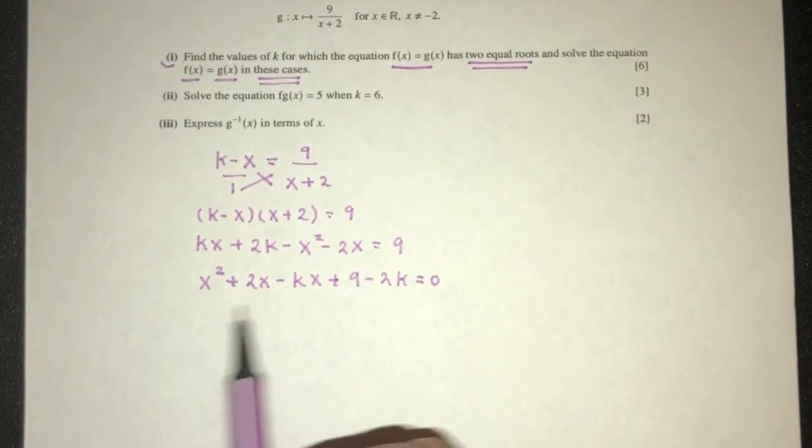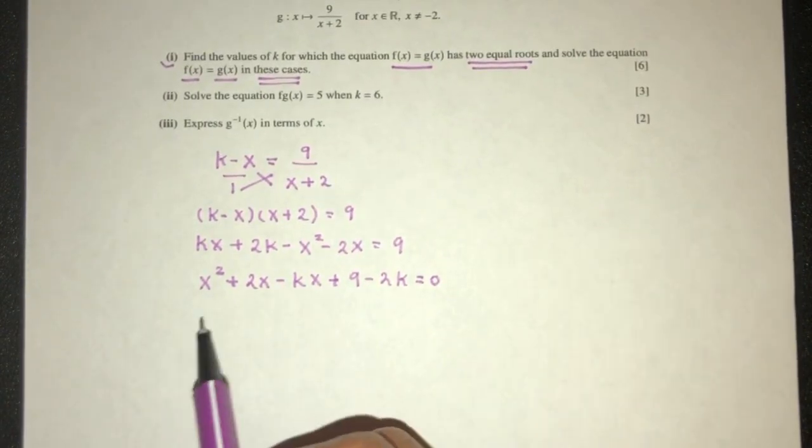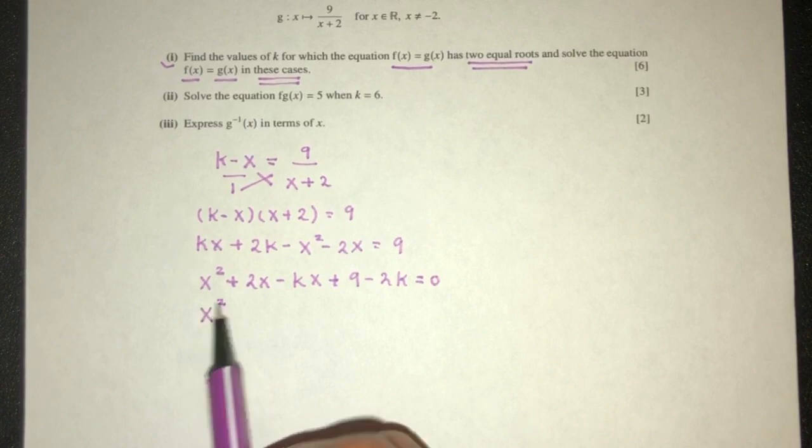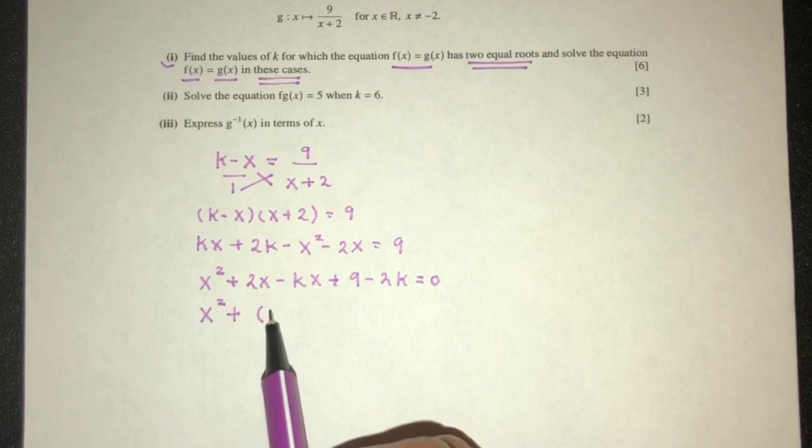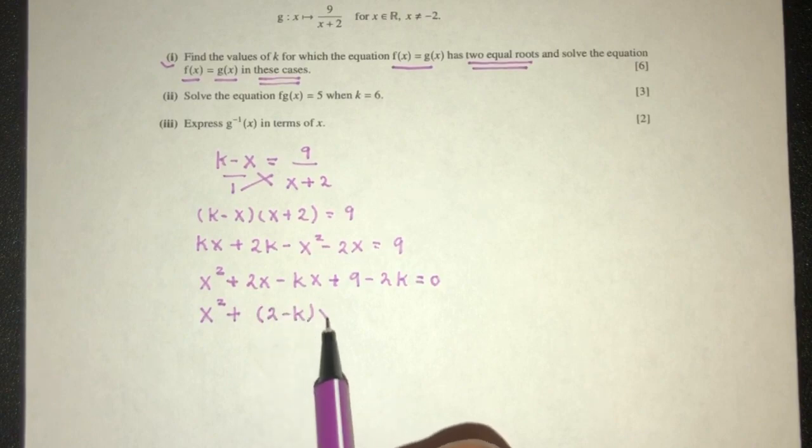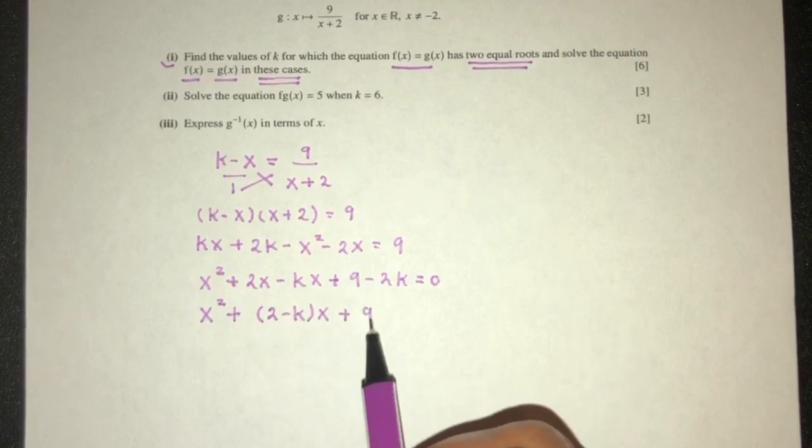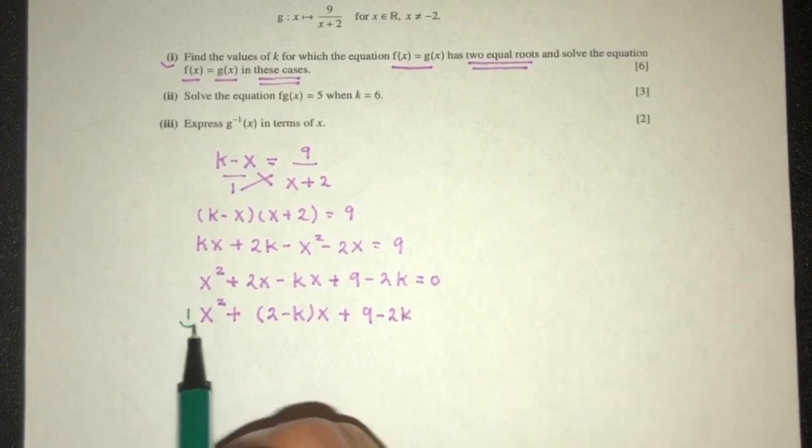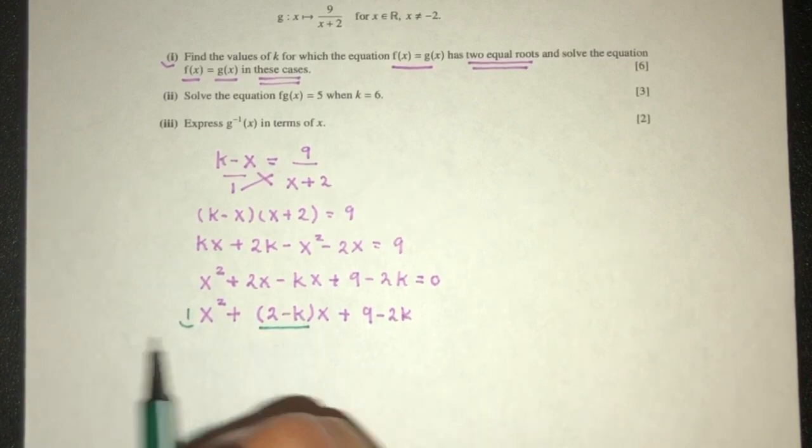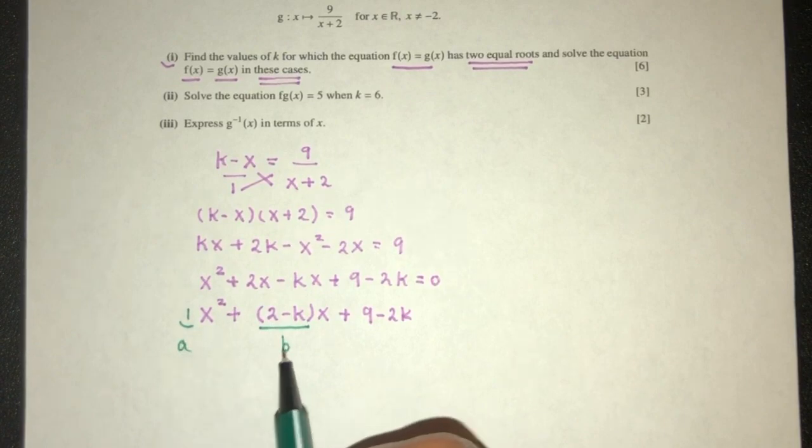Now we can simplify this. We will have x² plus factorize x, you have (2 - k)x. Here we have 9 - 2k. So obviously this is the value of 1, this is the value of a, b, and c.